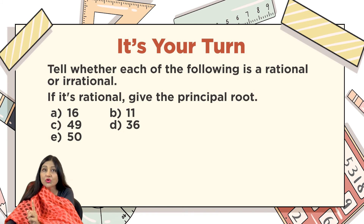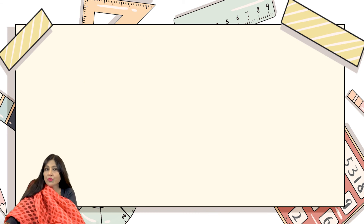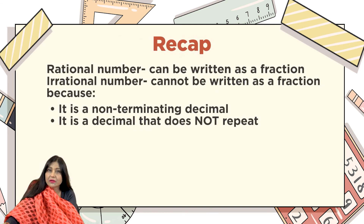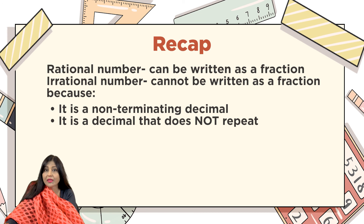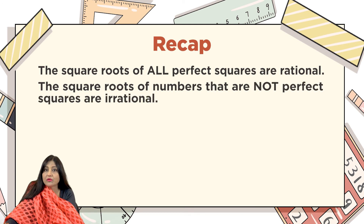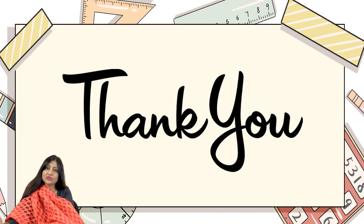To recap: a rational number can be written as a fraction. An irrational number cannot be written as a fraction because it is a non-terminating, non-repeating decimal. The square roots of all perfect squares are rational, and the square roots of numbers that are not perfect squares are irrational. I hope you liked my video — thank you so much!